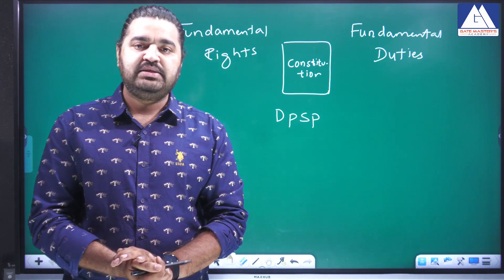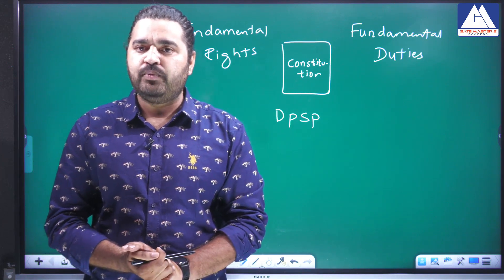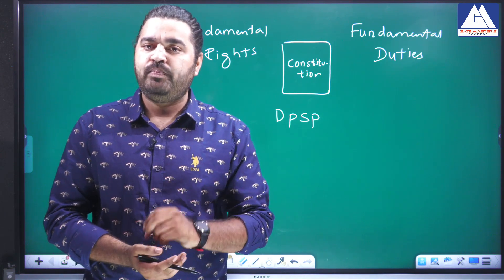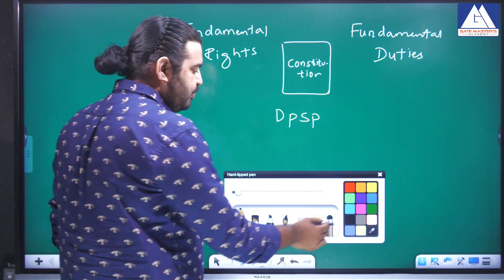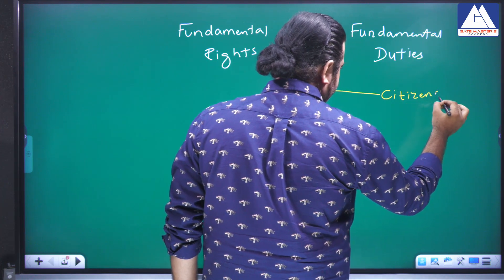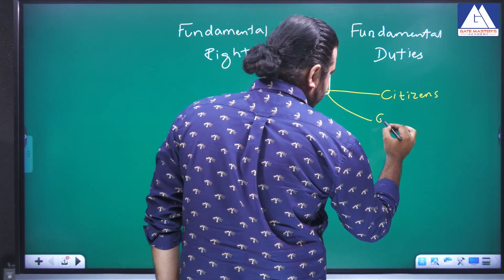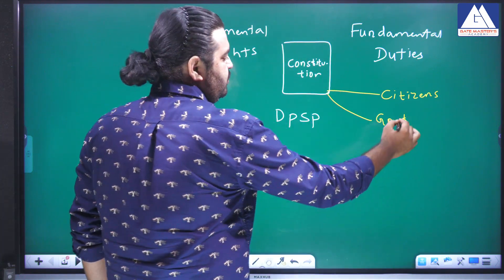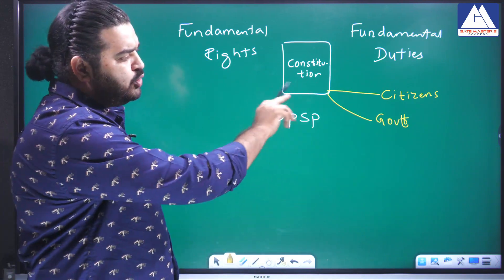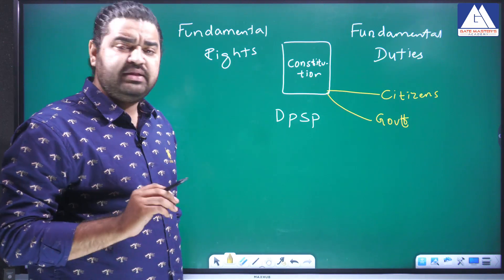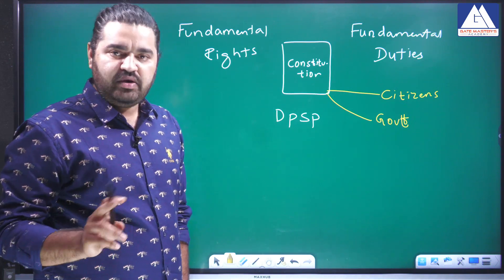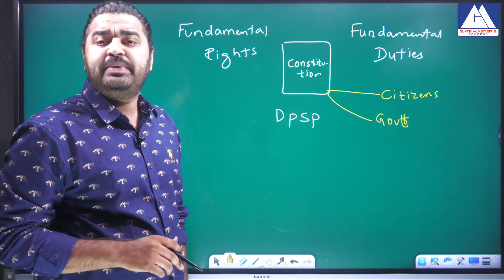First let us start with fundamental rights. Before that, while framing the constitution, the makers of the constitution had to keep two stakeholders in mind: one is the citizens, and the other one is the government. Fundamental rights and fundamental duties are for citizens, not for the government. DPSP is for government.